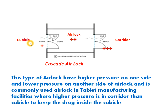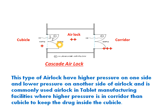Air flows from corridor to airlock and from airlock to cubicle. This is done to avoid contamination — to prevent powder or particles generated in the cubicle from coming out and mixing with the corridor air. If contaminated air reaches the corridor, it can travel to other areas where other drugs are manufactured and contaminate those products. By keeping maximum pressure in the corridor and minimum in the cubicle, air flows inward and cleanliness is maintained. This type is mostly used in tablet manufacturing areas.